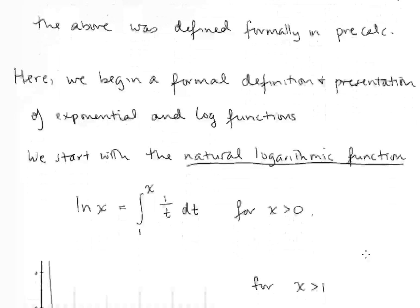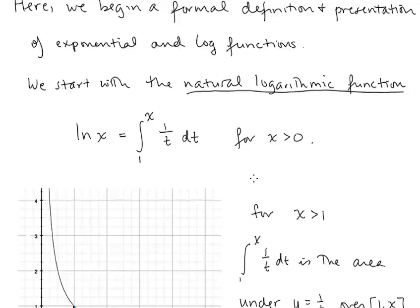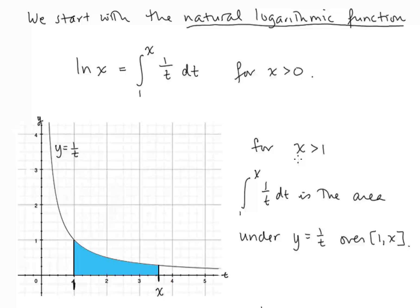Our natural logarithmic function ln x is going to be defined as the integral from 1 to x of 1 over t dt, and this is defined for x positive. For x greater than 1, we can interpret this integral as the area under the curve y equals 1 over t between the t values of 1 and x.